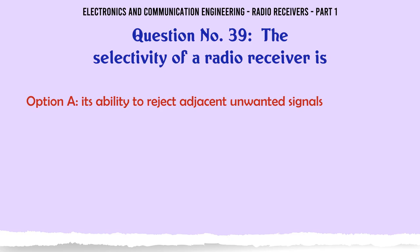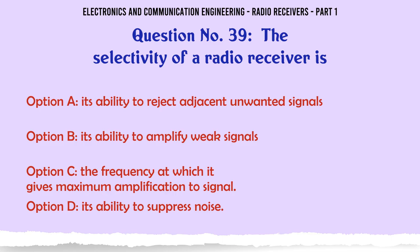The selectivity of a radio receiver is: A. Its ability to reject adjacent unwanted signals. C. The frequency at which it gives maximum amplification to a signal. D. Its ability to suppress noise.